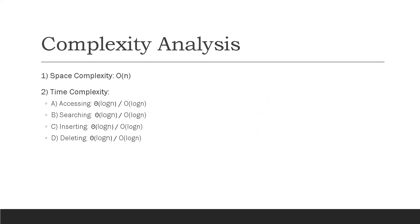Now let's discuss the complexity analysis of a 2-3 tree. The space complexity is linear, which means that for n nodes we need O(n) amount of space. Since the height of the tree is always balanced, and the complexity of different operations is directly related to its height, a 2-3 tree is highly efficient. Since height is in the order of O(log n), where n is the number of nodes, all operations — access, search, insertion, and deletion — are O(log n) in both the worst and average case.